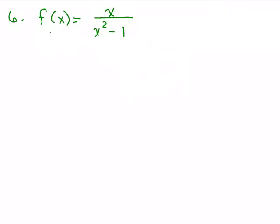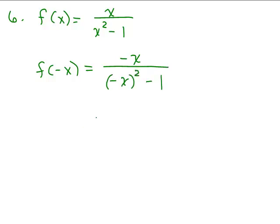All right, here's our next one. F of x equals x over x squared minus 1. So we're going to plug in negative x in place of x. I have a negative x in the numerator but the denominator is x squared minus 1. So the first question: is that the same as the original function? That's not true.